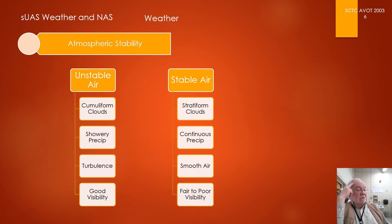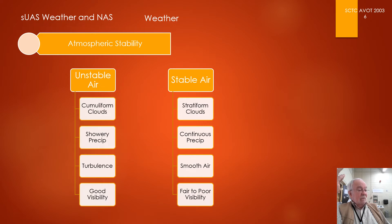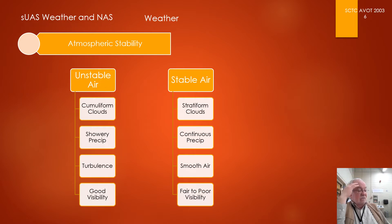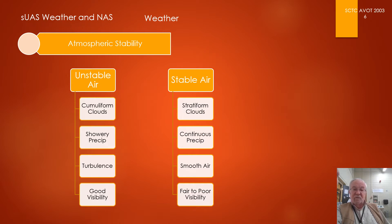Another question: upon preflight evaluation, a forecast states that there is an unstable air mass approaching your location — which would NOT be a concern for your operation? With an unstable air mass, we'd generally have thunderstorms and turbulence. The three choices are: A) thunderstorms, B) stratiform clouds, C) turbulent conditions. Thunderstorms and turbulent conditions are concerns for unstable air, but stratiform clouds — no, that's more typical of stable air. So B is the answer.